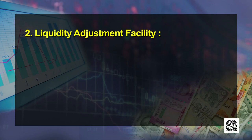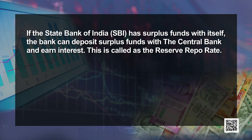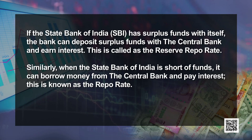The next tool is liquidity adjustment facility, which is divided into two parts: repo rate and reverse repo rate. Like a person who can either deposit money with the bank or borrow from it, commercial banks can also deposit surplus funds with the RBI or borrow from it. When State Bank of India has surplus funds, it deposits them with the central bank and earns interest known as the reverse repo rate. When SBI is short of funds, it borrows from the central bank and pays interest known as the repo rate. Both of these interest rates are short-term.